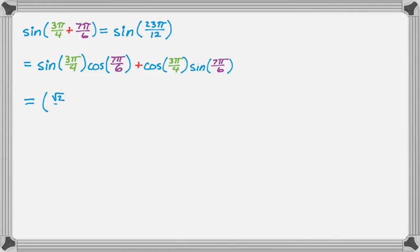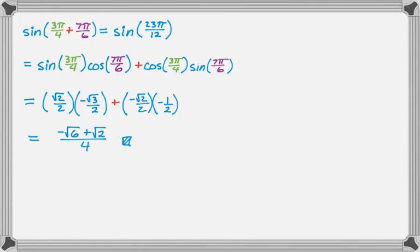So this will be equal to sine of 3π over 4 is √2 over 2. Cosine of 7π over 6 is negative √3 over 2 plus the cosine of 3π over 4 is negative √2 over 2, and the sine of 7π over 6 is negative 1 half. And then I can just simplify that. So I get that as my answer for this. That's a pretty standard application of these.